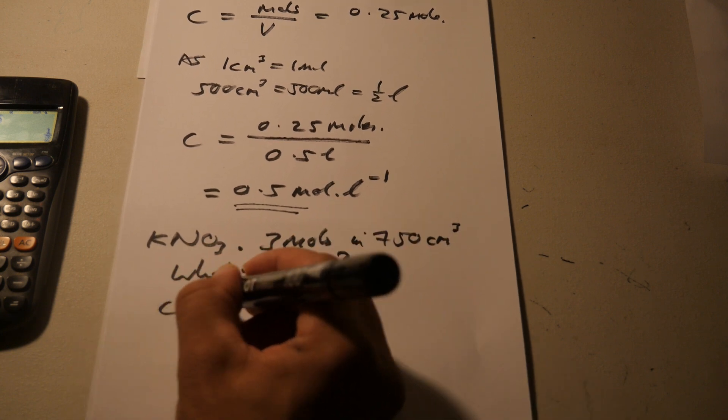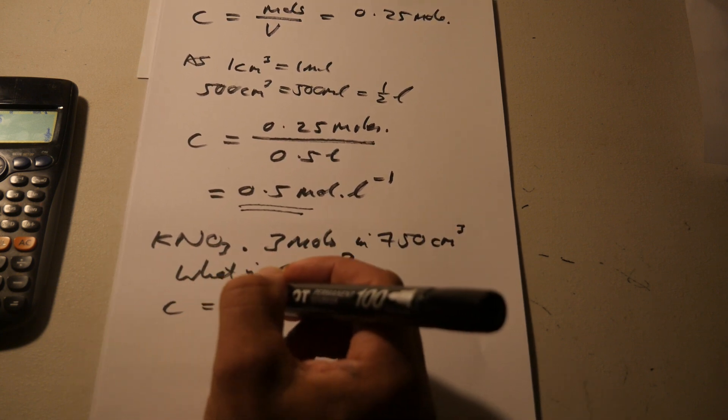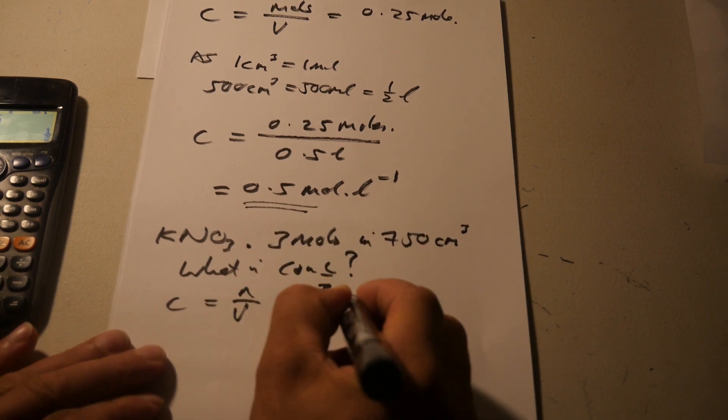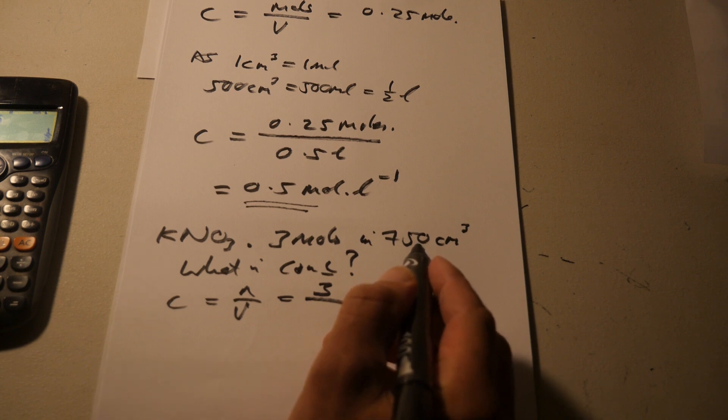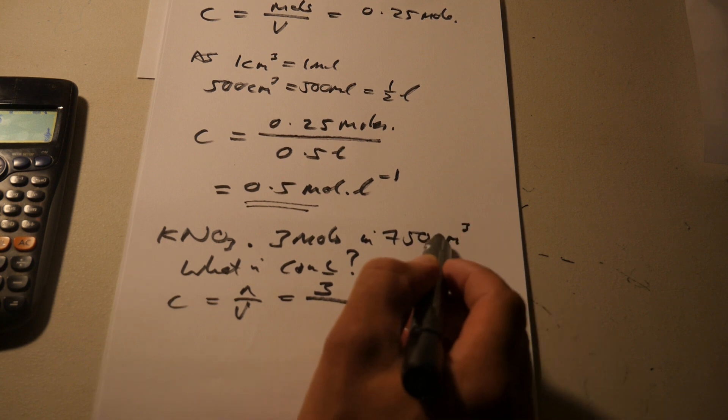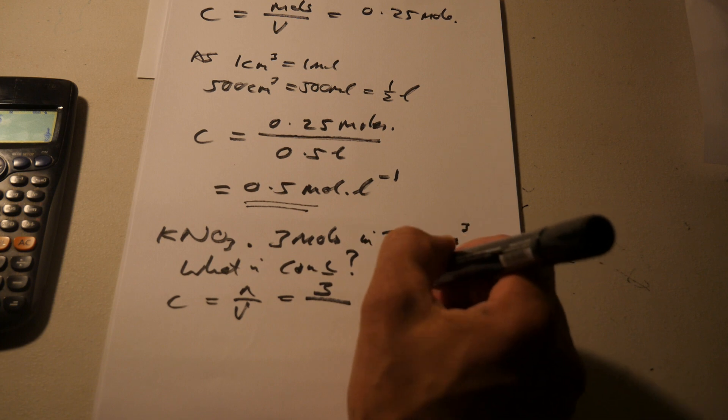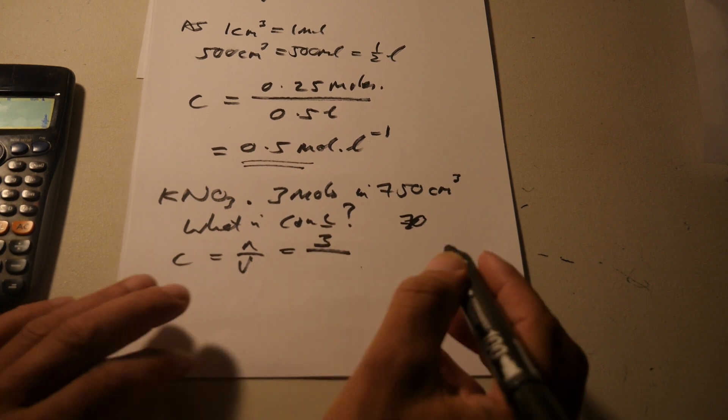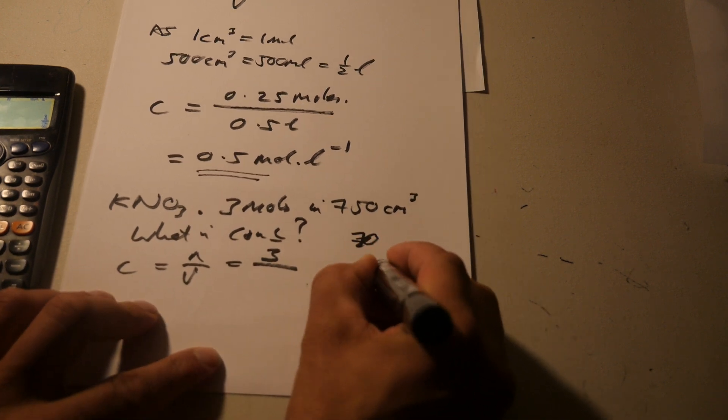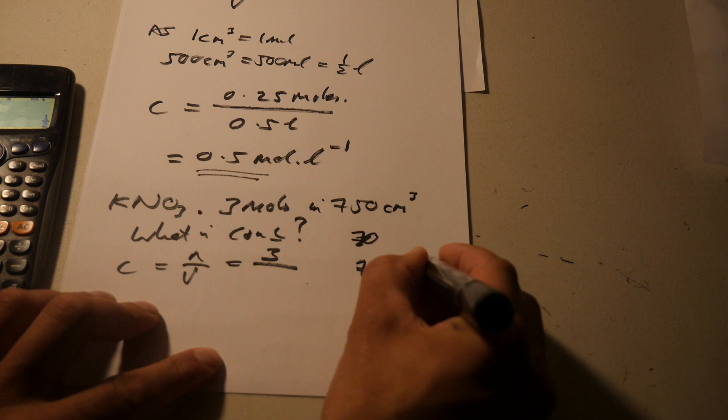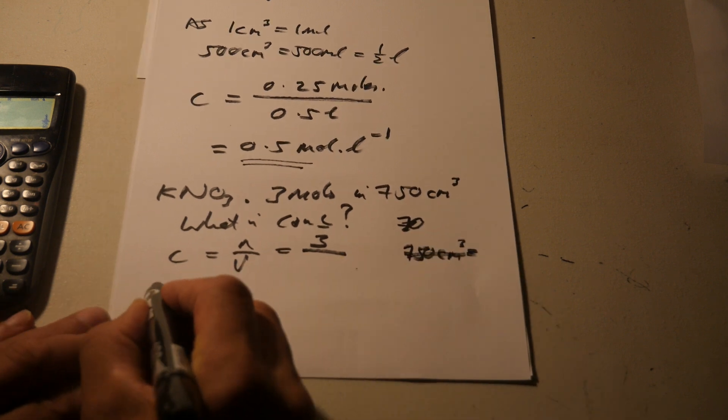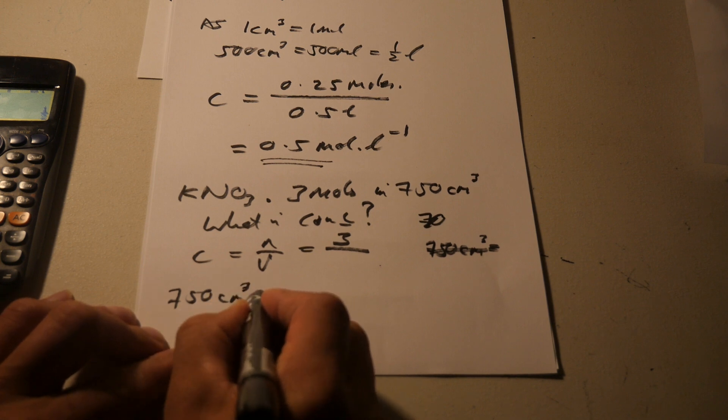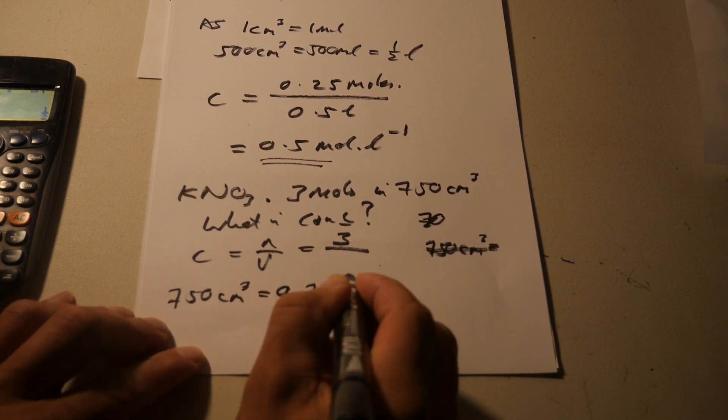So, concentration is number of moles over volume. We know that n equals 3 and the, since the volume is 750 centimeters cubed, sorry. So, as 750 centimeters cubed equals, I'll write it over here, there's no space. 750 centimeters cubed equals 0.75 liters.